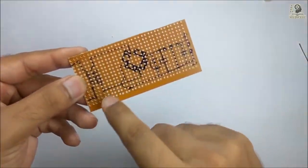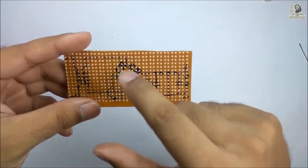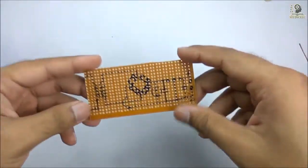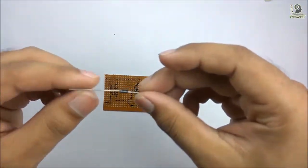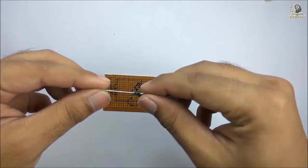First, I have already drawn the schematic on this PCB so that I can easily place the components. I am going to put the diode at first.